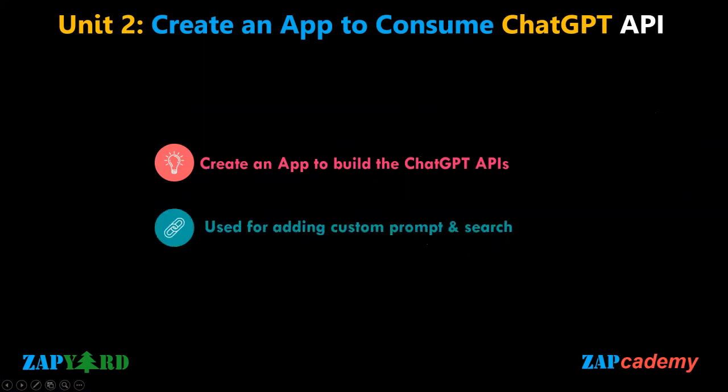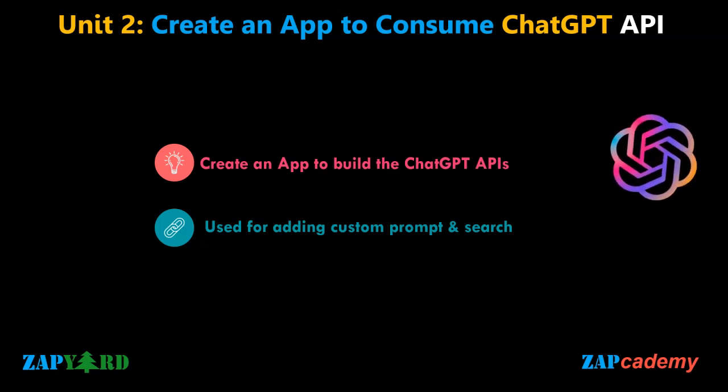In Unit 2, we will guide you through the process of creating a powerful application that consumes the ChatGPT API. Participants will dive into the intricacies of building ChatGPT APIs from scratch, gain a comprehensive understanding of the underlying architecture, and learn how to harness its capabilities to create dynamic, interactive, conversational interfaces. We will explore the nuances of designing APIs that enable seamless integration with ChatGPT, and also discover how to craft prompts that align with specific use cases, enabling ChatGPT to provide tailored responses and personalized interactions.